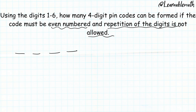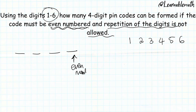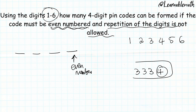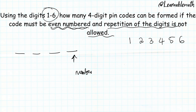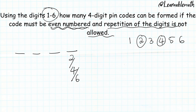We are only using digits one to six, so my choices are one, two, three, four, five, and six. Let's look at the first restriction — the code must be even numbered. A number is even if the last digit is an even number. So from our choices one to six, the even numbers are two, four, and six. I have three choices for the last position.